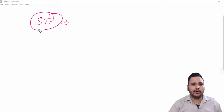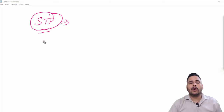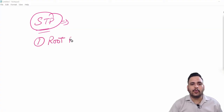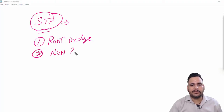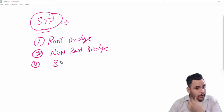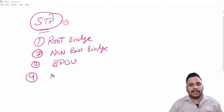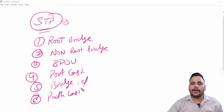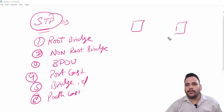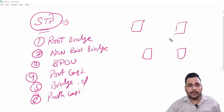To understand STP or RSTP, you need to understand the basic terms of Spanning Tree. First you need to understand root bridge and non-root bridge. Third, you need to know about BPDU, port cost, bridge ID, and path cost.